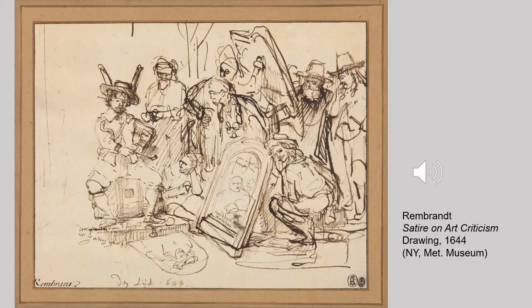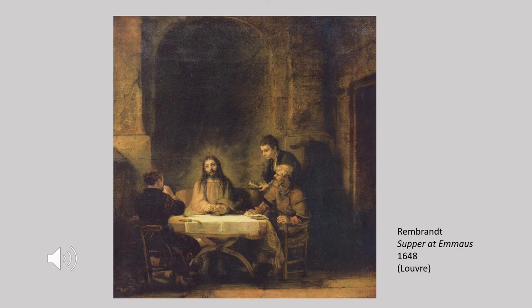Already in 1644 Rembrandt seems to have been feeling pressure, resisting the critique of connoisseurs not particularly impressed with his achievements. He responds with an extraordinary drawing in which you see a critic wearing a hat with the ears of an ass pointing at a half-length figure of the kind Rembrandt's workshop frequently produced, while in the lower right corner the artist expresses his response to this critique by defecating on the floor. In 1642, while working on The Night Watch, Saskia passed away — the greatest culmination of success in his career and the greatest tragedy all in one year. After this, his art takes a more inward turn, concerned with quiet, somber subject matter.